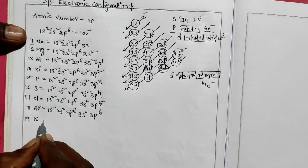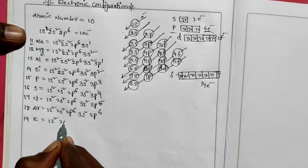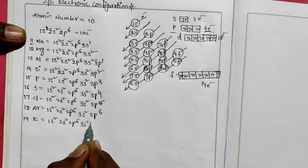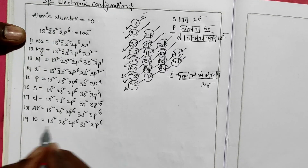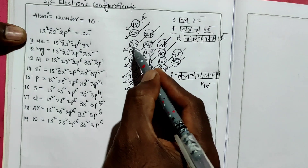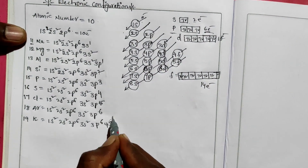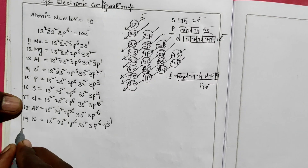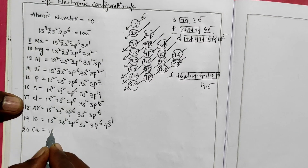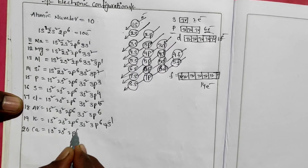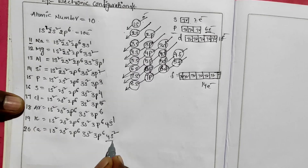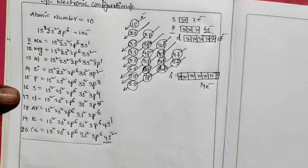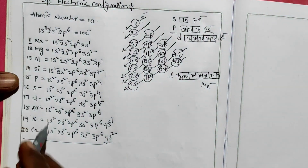Atomic number 18 is argon. Atomic number 19 is potassium: 1s2, 2s2, 2p6, 3s2, 3p6 — that is 18 electrons — plus 1 extra electron that enters the 4s orbital, so 4s1. Atomic number 20 is calcium: 1s2, 2s2, 2p6, 3s2, 3p6, 4s2. That completes up to 20 elements.